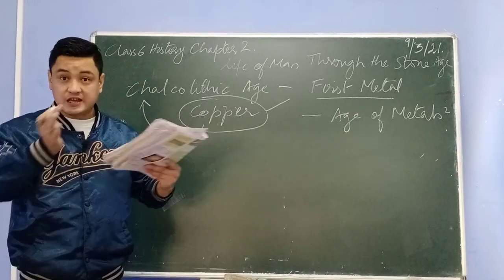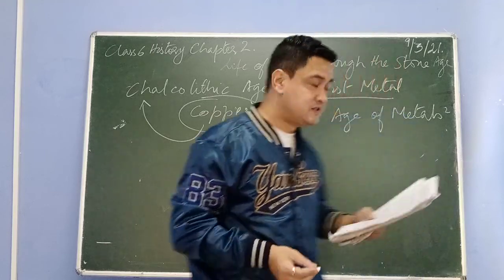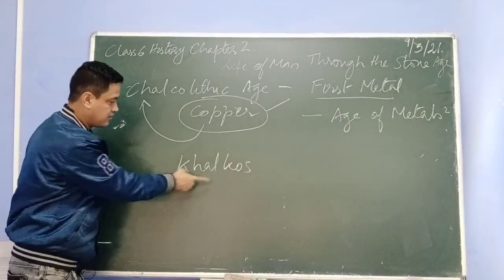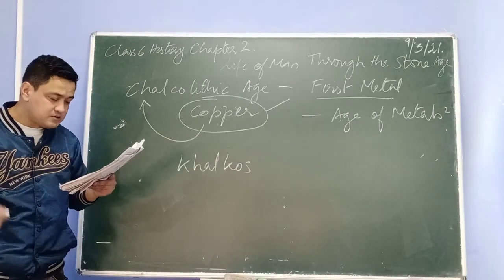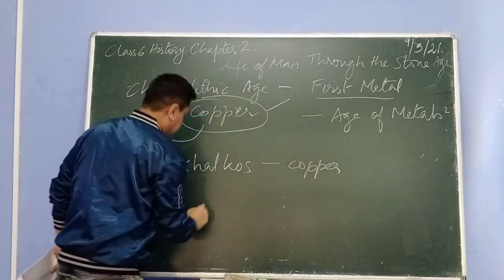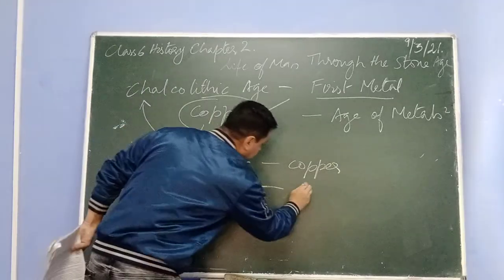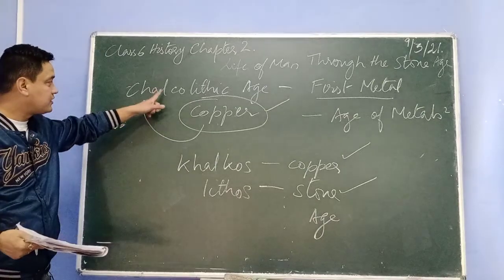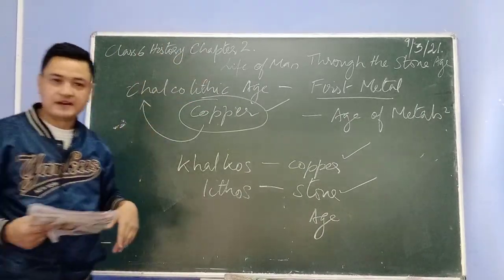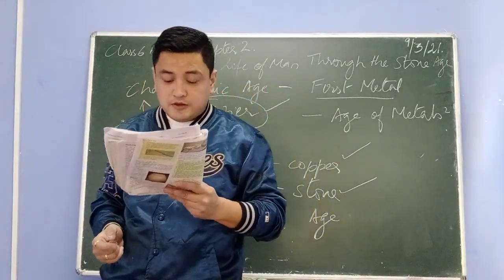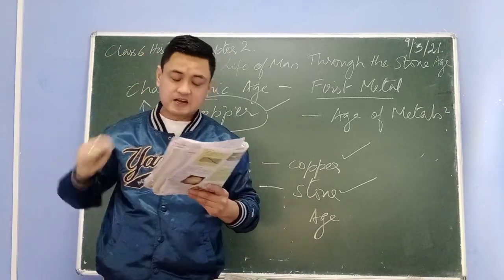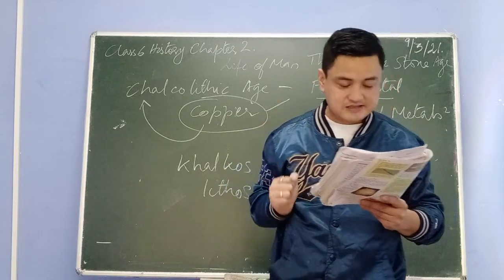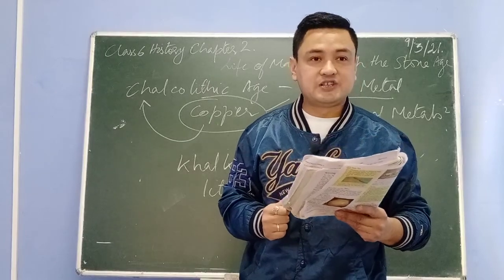The word 'chalcolithic' is made up of two Greek words: 'chalcos' means copper, and 'lithos' means stone. So it is also known as the Copper Stone Age. This age started from 4000 BCE and ended in 2000 BCE. In this period man moved from the stone age to the age of metals. In India, chalcolithic tools have been found from the Gangetic basin.